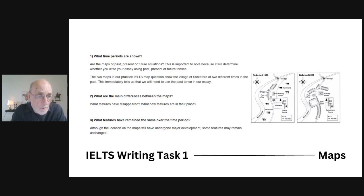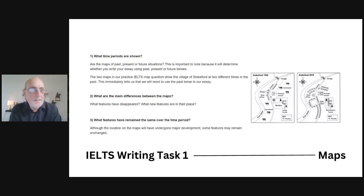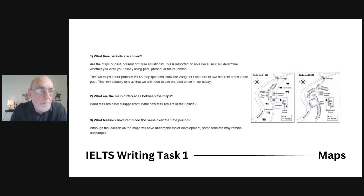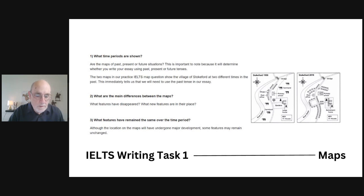The time period will determine how you write about the maps. If you're writing about the future, you'll use future tense grammar; if writing about the past, you'll use past tense. As you look at the two maps across time periods, notice what features have disappeared, what new features appear in the second map, and what features have remained the same across both maps. This is how you'll decide what to write about.